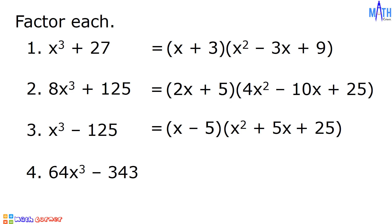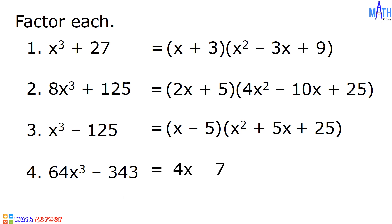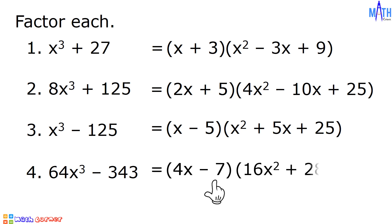Last example, let us factor 64x cubed minus 343. For the binomial factor, the cube root of 64x cubed is equal to 4x, since 4x times 4x times 4x is equal to 64x cubed. And the cube root of 343 is equal to 7, so we have 4x minus 7. For the trinomial factor, 4x times 4x is equal to 16x squared. The opposite of 4x times negative 7 is positive 28x. And negative 7 times negative 7 is equal to positive 49. So we have quantity 4x minus 7 times quantity 16x squared plus 28x plus 49.